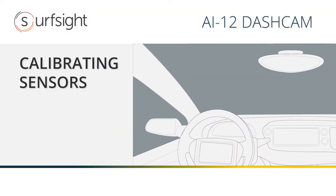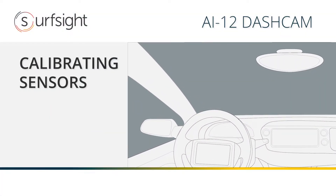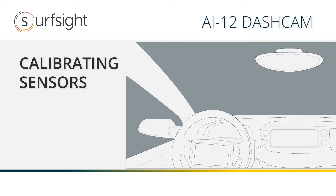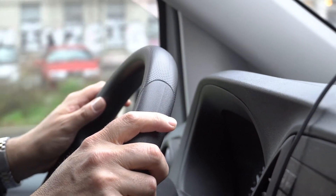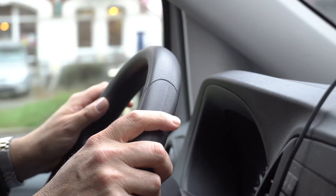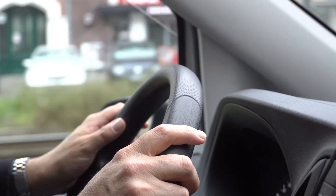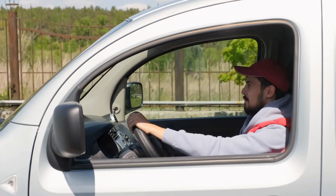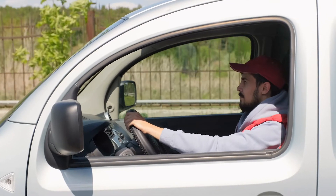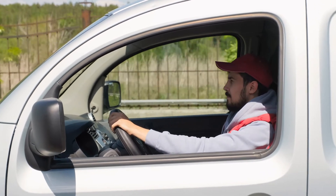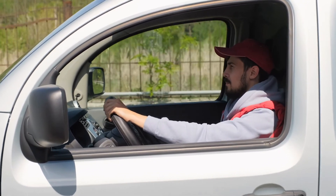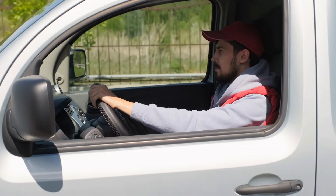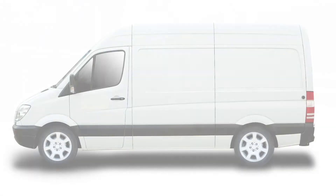It's important to calibrate the sensors before using your dash cam. The SurfSight AI-12 contains an internal accelerometer that detects unsafe driving events. The accelerometer is not calibrated in advance, as the installation in every vehicle is different. Please follow these steps to calibrate the accelerometer.